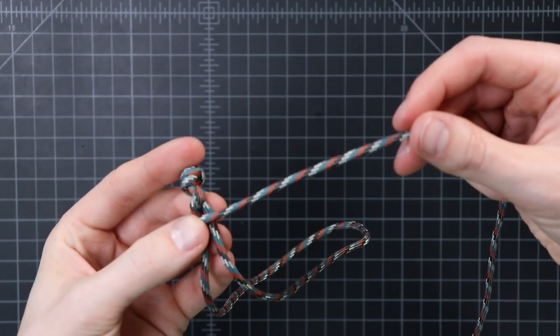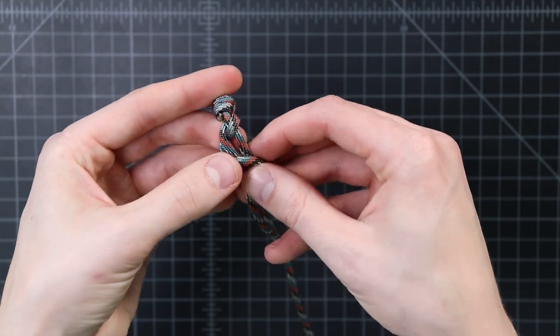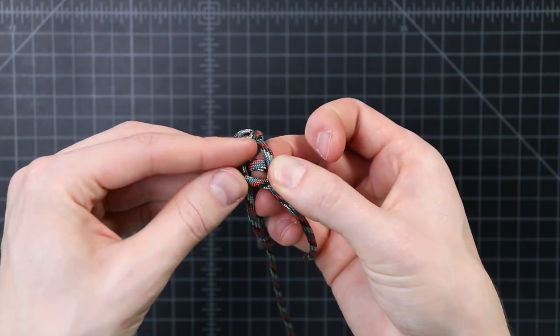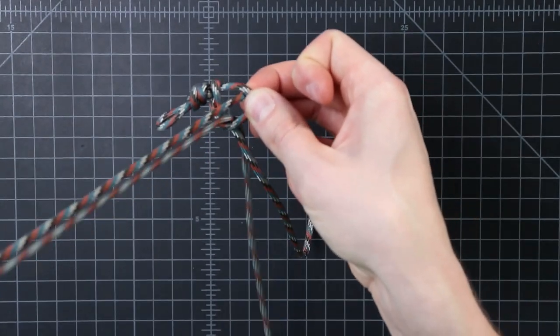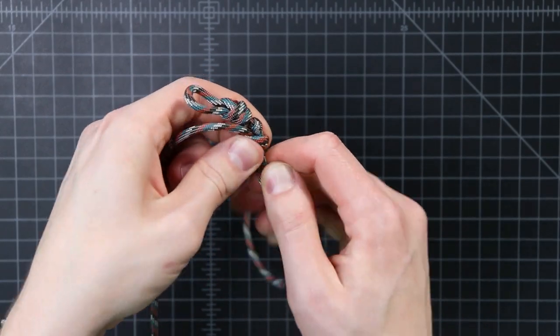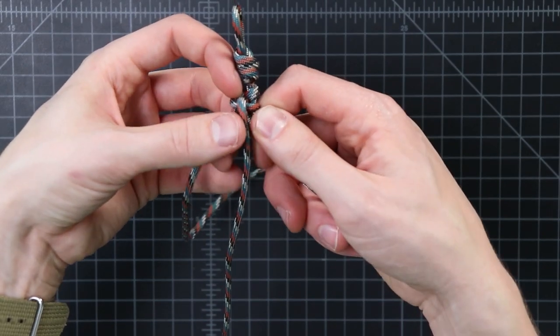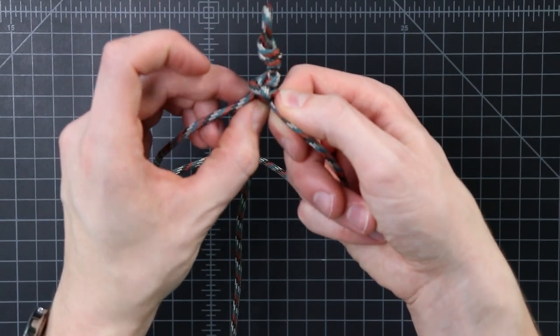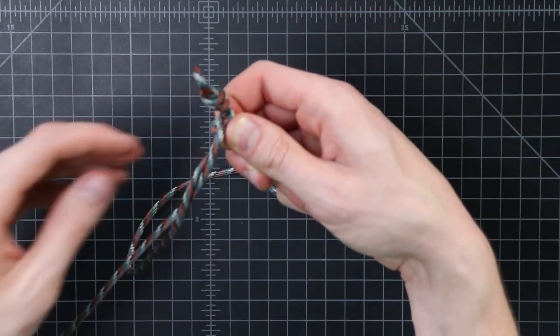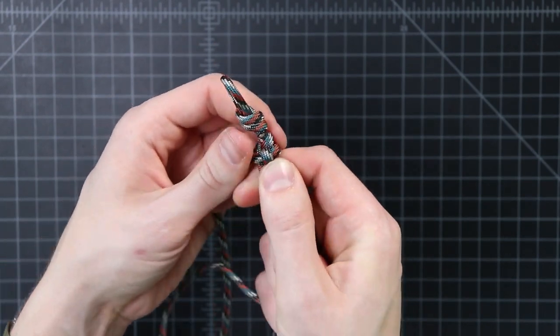So now we're going to take our cord, wrap it downward, and then we're going to come up through this hole here. I'll do that once again if you didn't see it. We'll tighten that one down, right up against that knot. Now with our cord, we're going to wrap it straight down through the middle, and back around to the left side. So now we've got that first bump of the bracelet that you saw on the thumbnail.